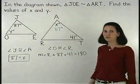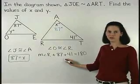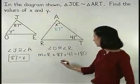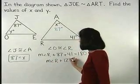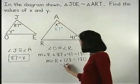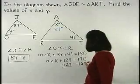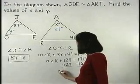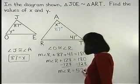Solving from here, 87 plus 41 is 128, so we have the measure of angle R plus 128 equals 180, and subtracting 128 from both sides, we find that the measure of angle R is 52 degrees.